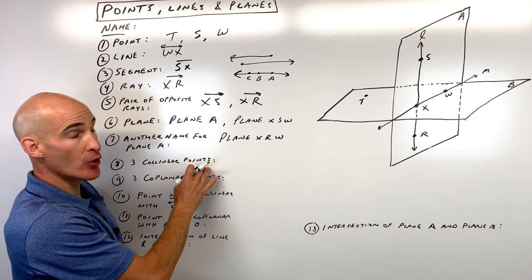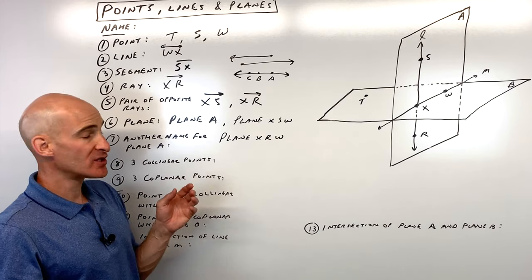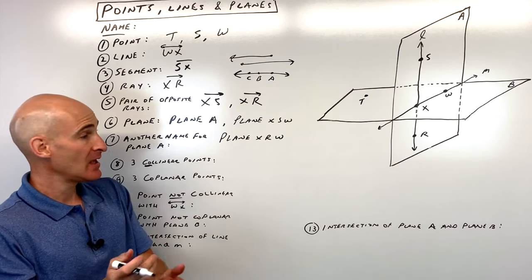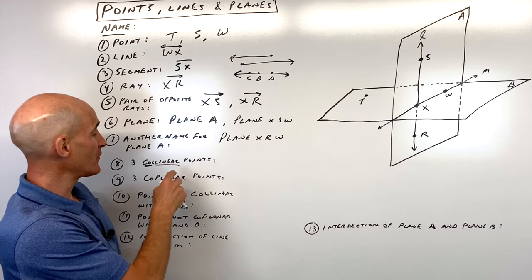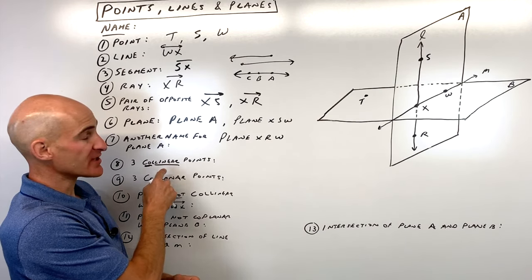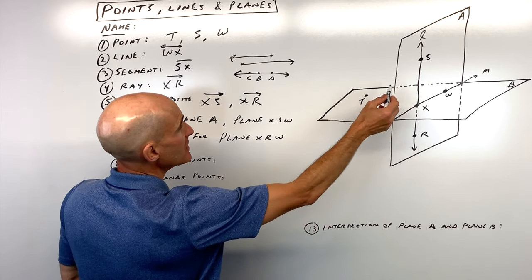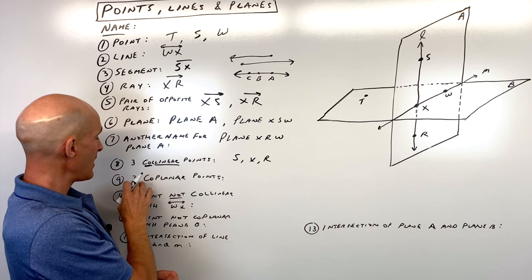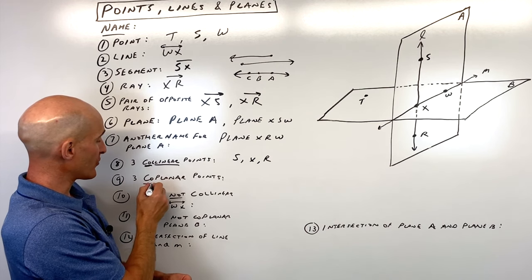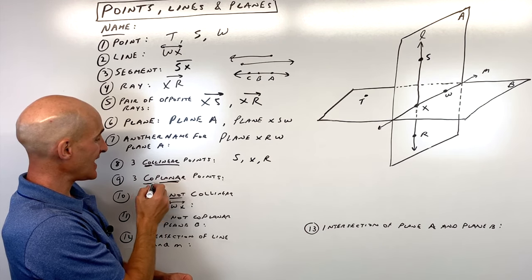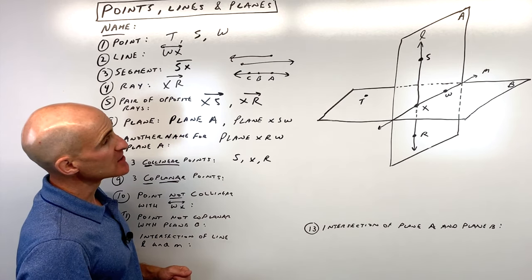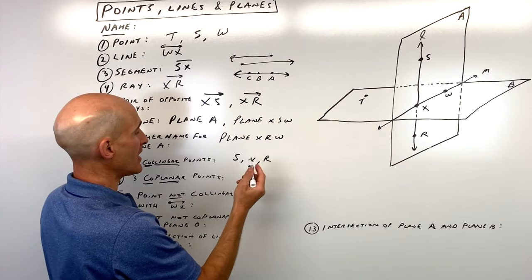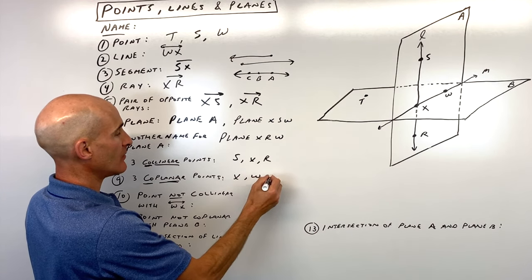For number eight, three collinear points. Now, we didn't talk about this too much yet, but when you see the word co, that means same. When you see the word linear, that means like line. So we're looking for three points that are on the same line. So an example here would be S, X, and R. Now, three coplanar points. So three points that are in the same plane, meaning the same flat surface. So we could do, for example, T, W, and X. They're in this flat plane B. So let's do X, W, and T.